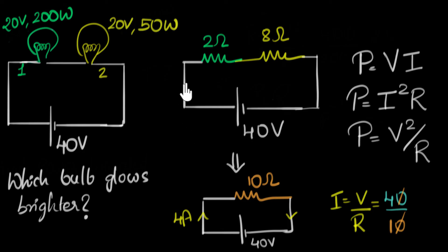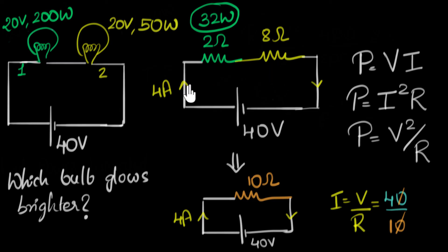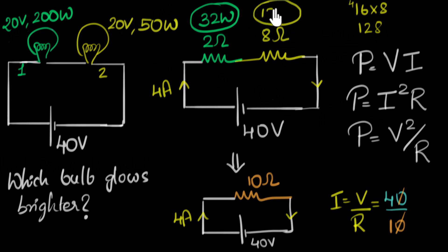The current through each resistor is 4 amps. Now we calculate the power in each using I squared R. For the first bulb (2 ohms): 4 squared times 2 equals 16 times 2, which is 32 watts. For the second bulb (8 ohms): 4 squared times 8 equals 16 times 8, which is 128 watts. So the power dissipated in the second bulb is 128 watts.